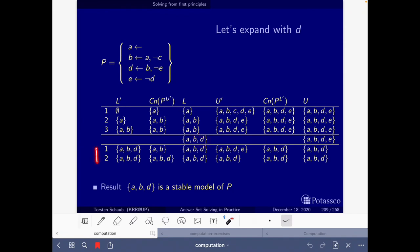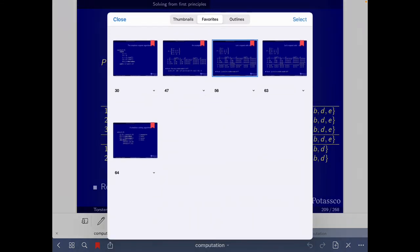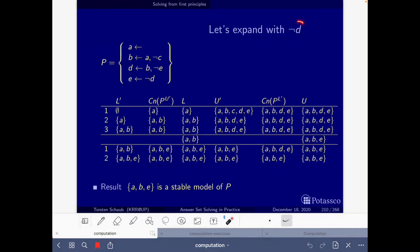Here we make D true and then we call expand again until we find the stable model ABD. Then here we have this other part where we expand with not D. To expand with not D we delete it from the set of possible atoms and then we call expand until we get to the stable model ABC.